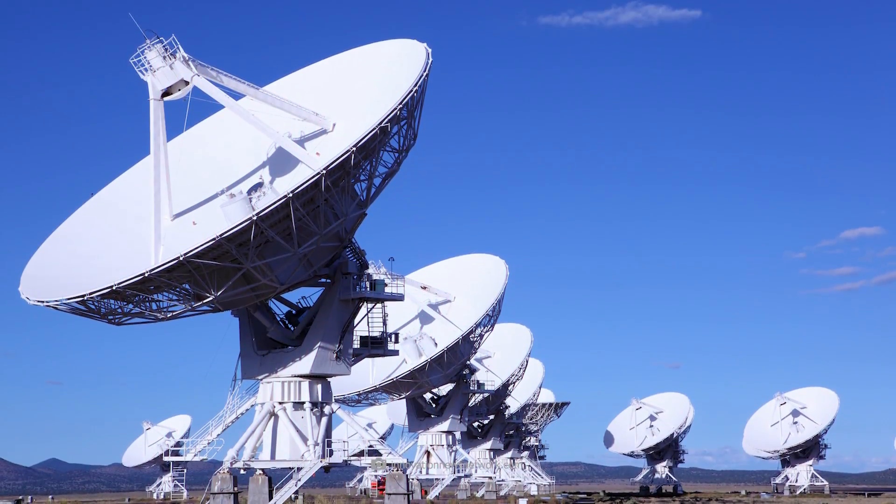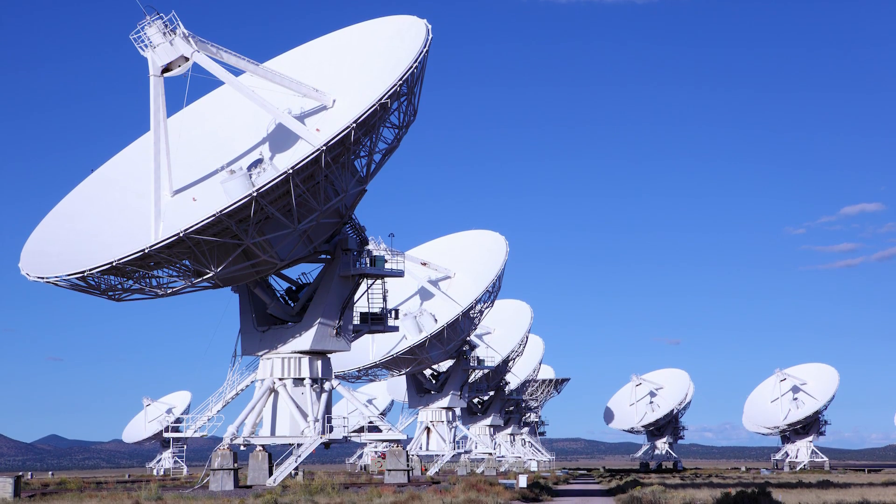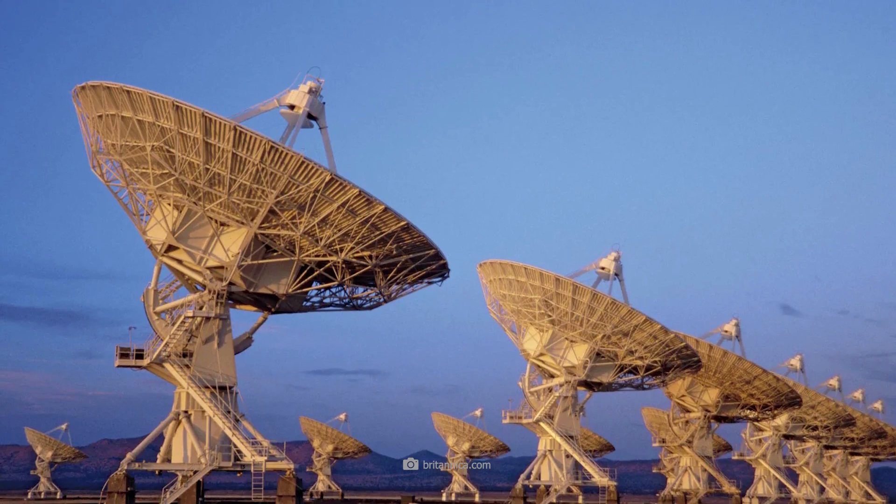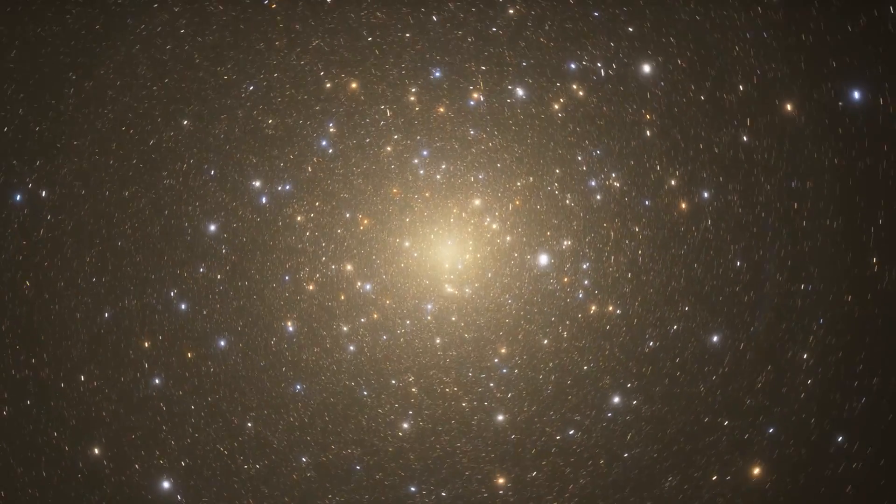This makes the radio telescope ideal for studying cold objects in the universe. The Very Large Array consists of 27 independent radio telescopes, each measuring 25 meters in diameter. The VLA covers a wide frequency range.